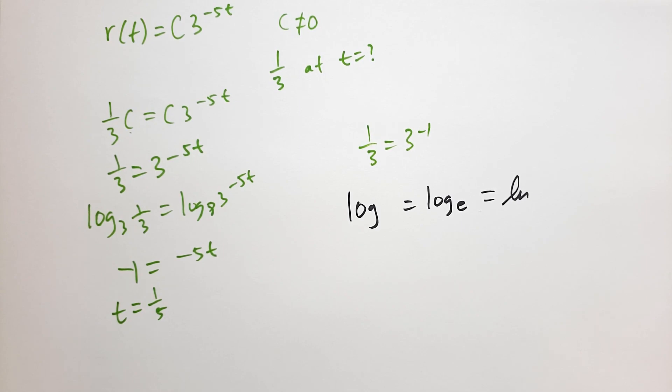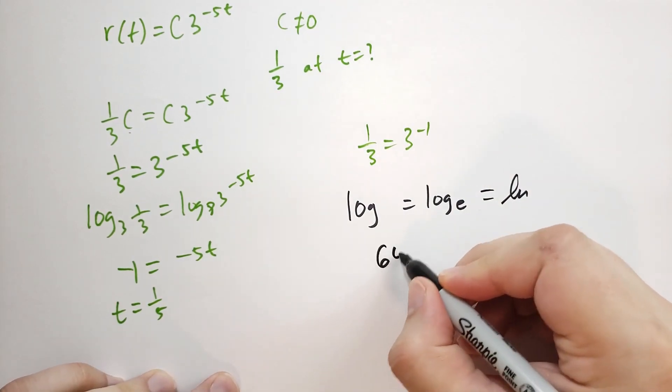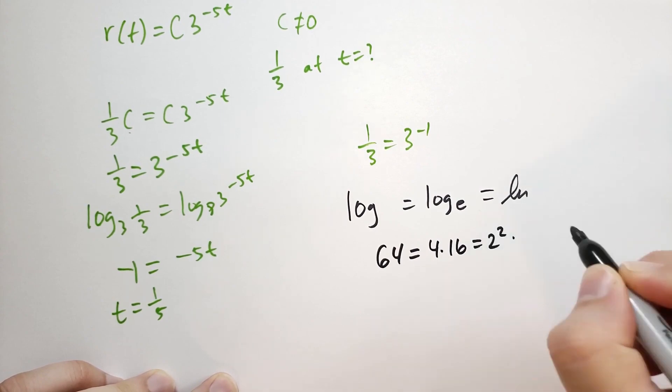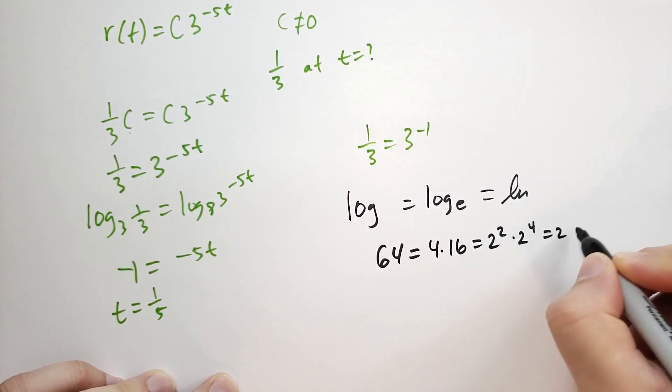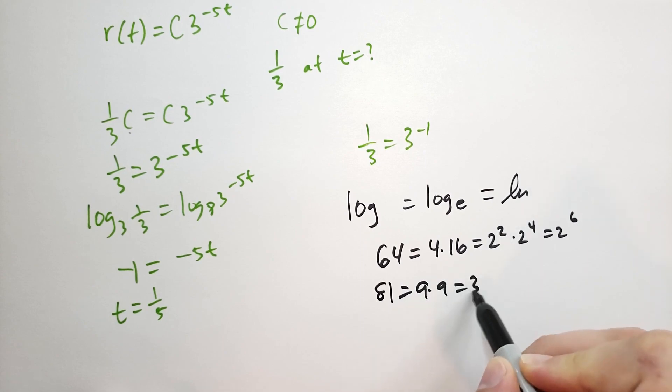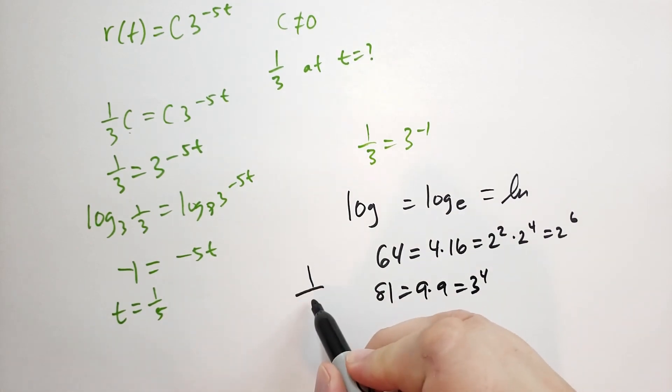Plug in the different values and see what you get. Log base 2 of 64. Remember that 64, what is 64? Well, that is 4 times 16. So that is 2 to the 2 times 2 to the 4. So that is 2 to the 6. So again, if you know your powers of 2, you would know that. 27 is 3 to the 3rd. 25 is 5 squared. And 64 is 2 to the 6th. 81 is 9 times 9, which is the same as 3 to the 4th power. Remember if it's 1 over 3 to the 4th, that's the same as 3 to the minus 4.